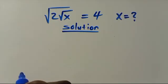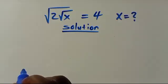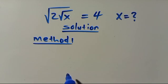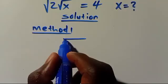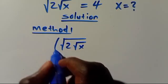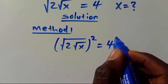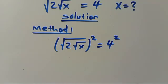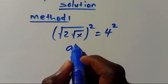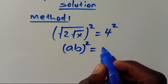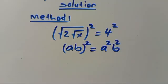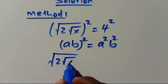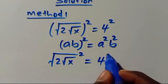We want to use two methods. Method one: we square both sides. So we have (√2 · √x)² = 4². When we have (ab)² it equals a² times b², so we get (√2)² · (√x)² = 4².